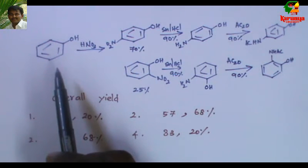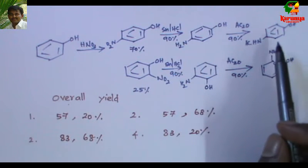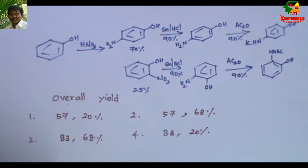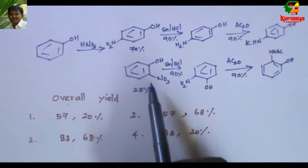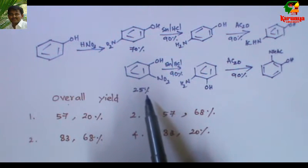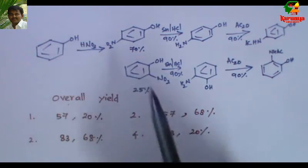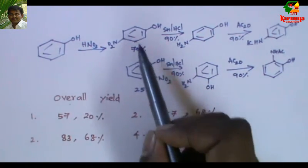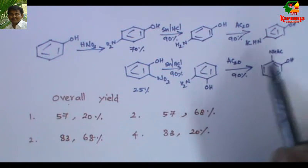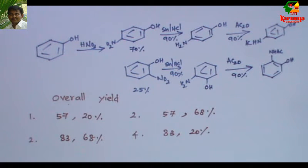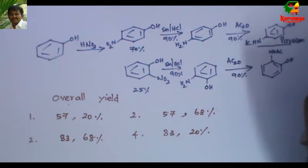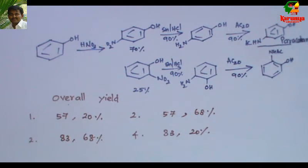The problem involves the conversion of phenol into 4-hydroxyacetanilide. When phenol is nitrated with HNO3, it undergoes nitration in the para position as well as in the ortho position. The yield of the para product is 70% and the ortho product is 25%. The nitro group is reduced in both ortho and para products to give the corresponding aniline, which were further acetylated with acetic anhydride to give 4-hydroxyacetanilide and 2-hydroxyacetanilide. This 4-hydroxyacetanilide is nothing but paracetamol, an antipyretic agent.